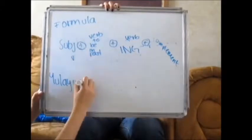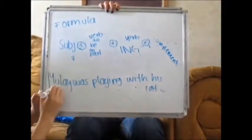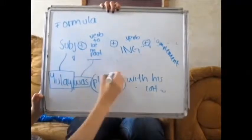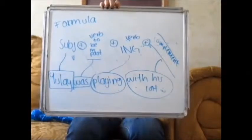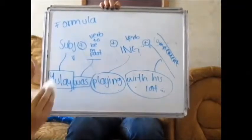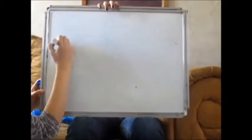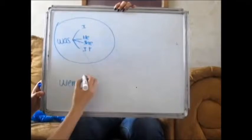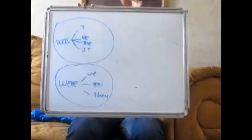An example is: July was playing with his cat. July is the subject, was is the verb to be in past, playing is the verb with -ing, and with his cat is the complement. Was is used for I, he, she, and it. And were is used for we, you, and they.